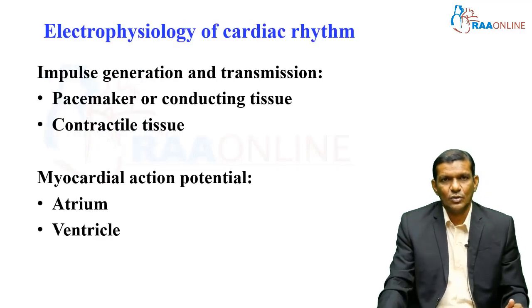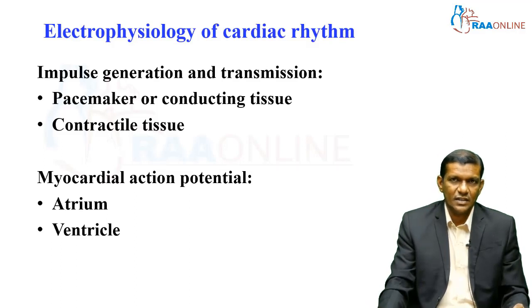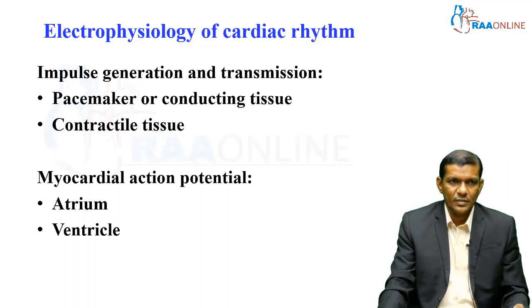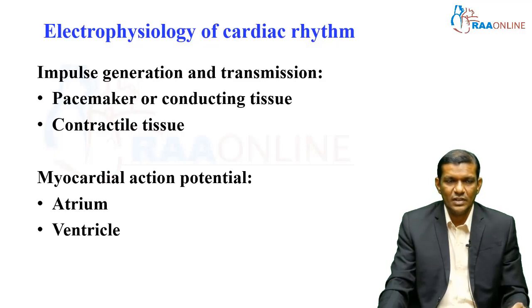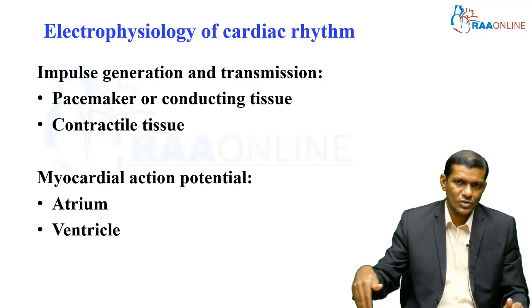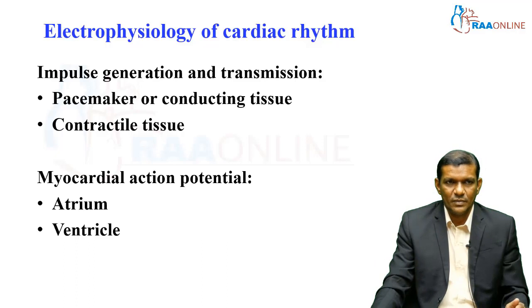The first topic is the electrophysiology of cardiac rhythm. In cardiac tissues, there are two types of tissue. One is the conducting tissue — the name itself suggests that impulses are conducted. For an impulse to be conducted, there must first be impulse generation, which commonly occurs at the pacemaker, the SA node.